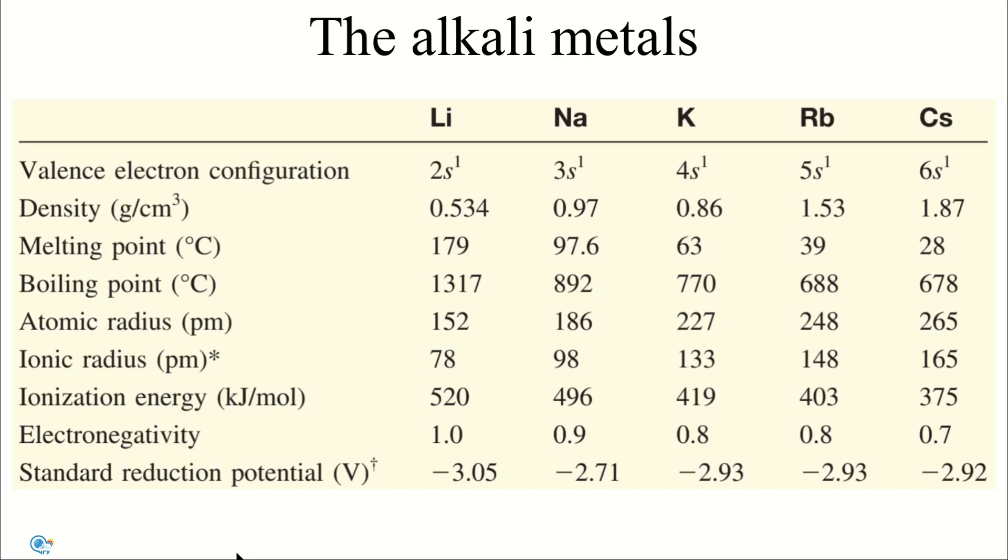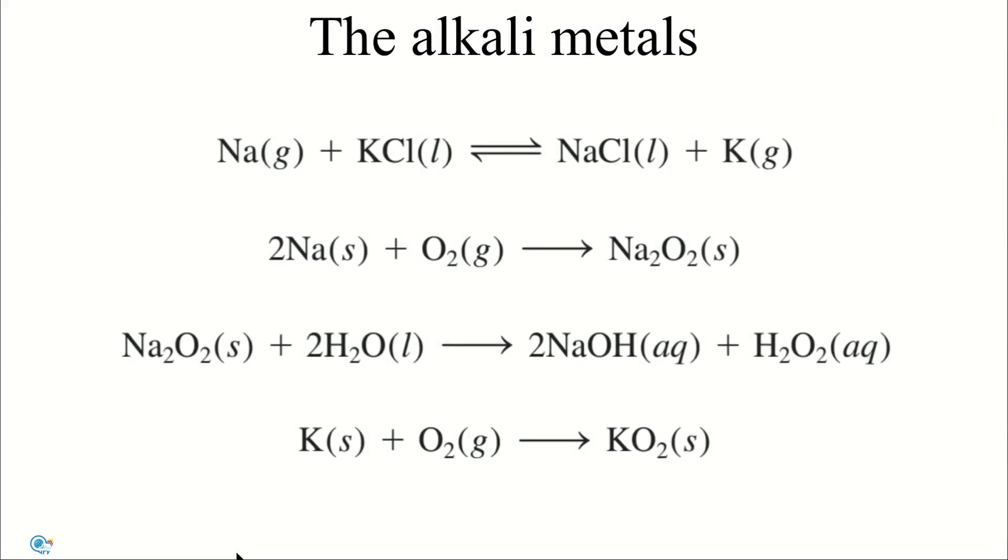The chemistry of lithium, rubidium, and cesium is less important. All last members of the group are radioactive. Sodium and potassium are about equally abundant in nature. They occur in silicate minerals such as albite and orthoclase.